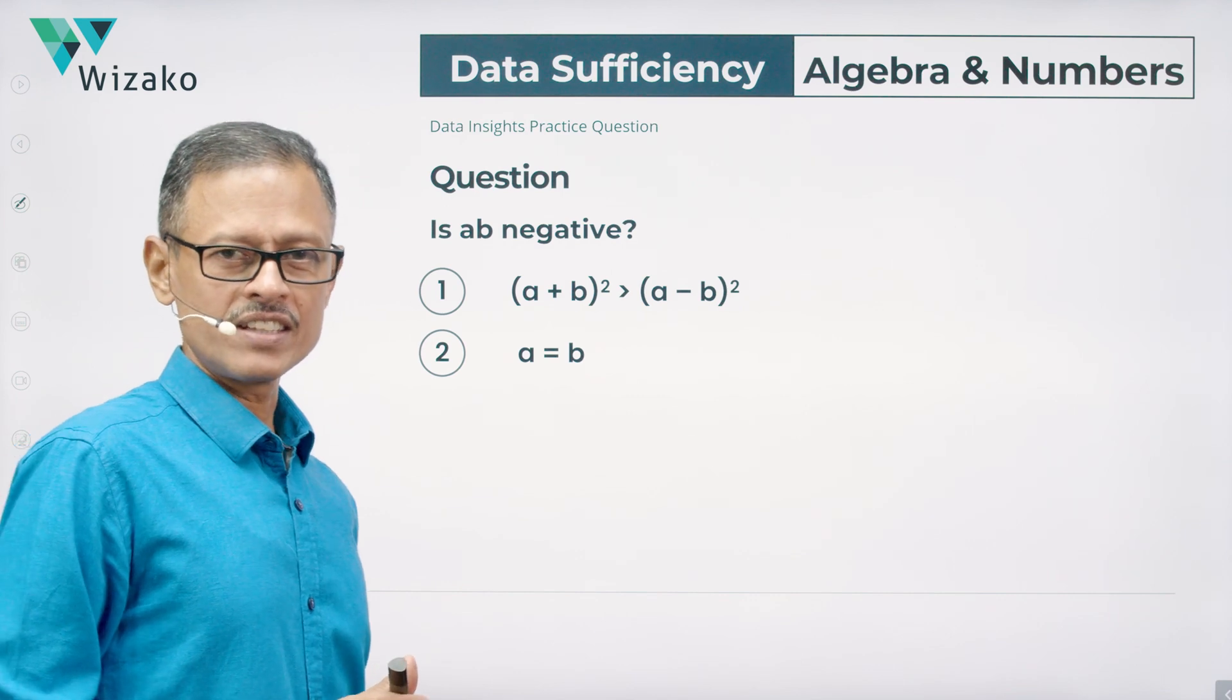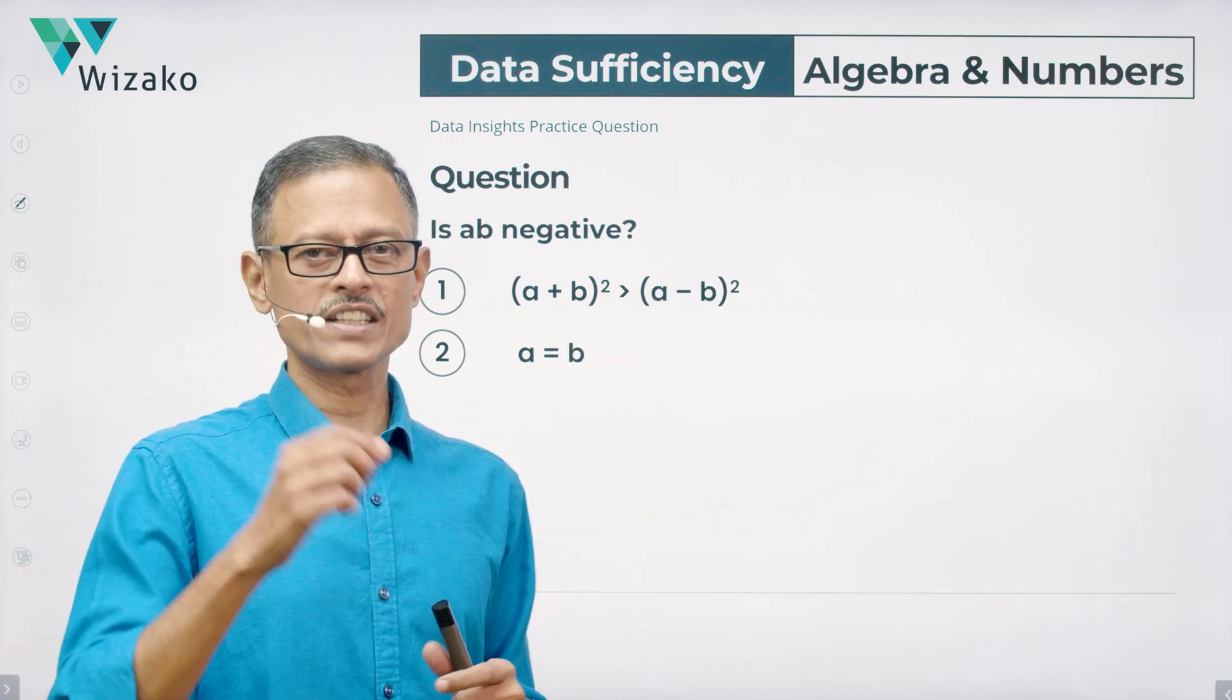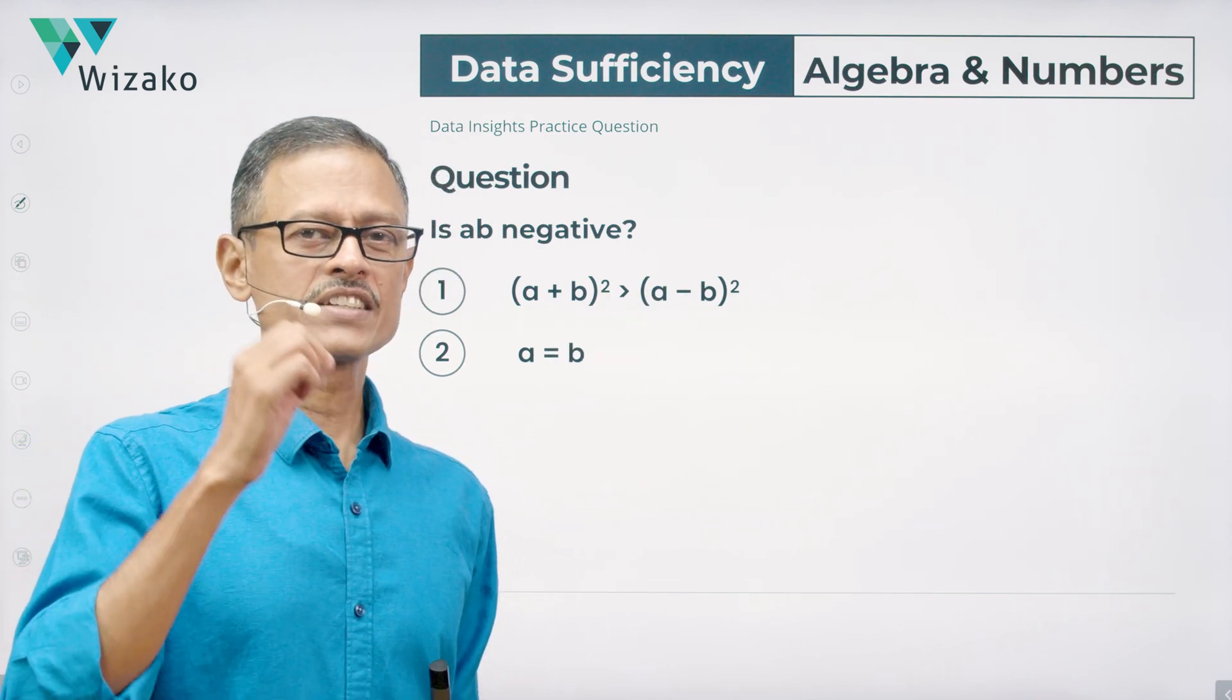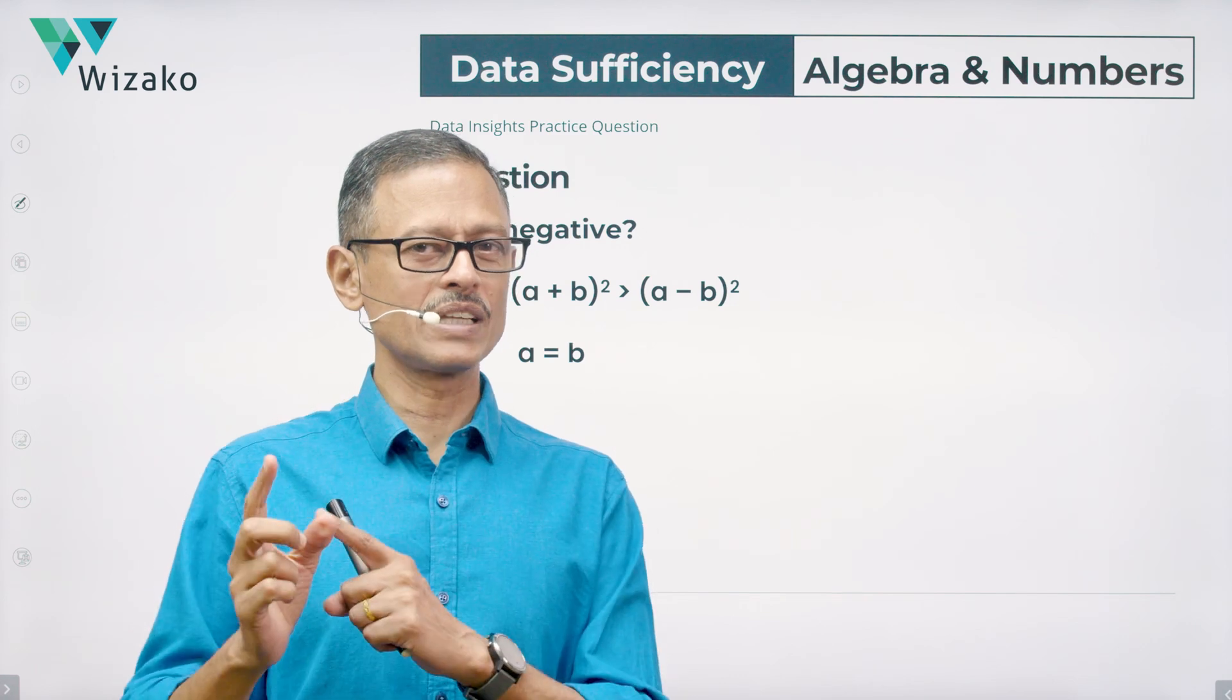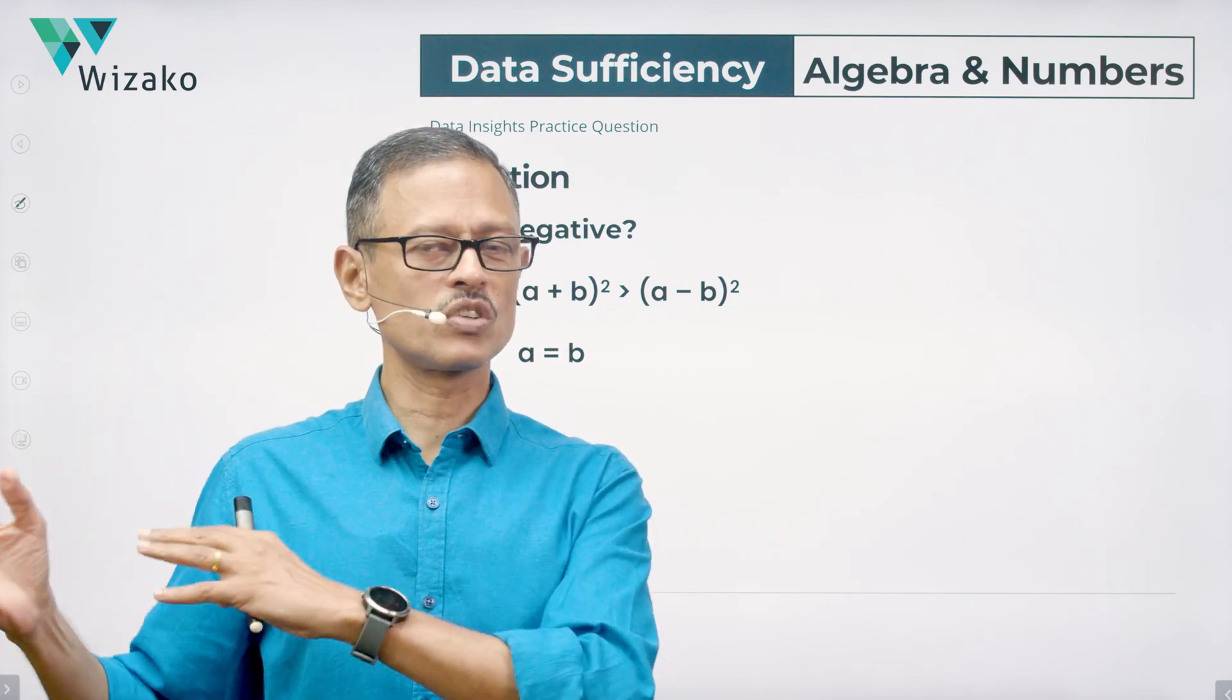Is AB negative the question? Two statements follow. We'll look at the statements in a while. Before that, let's take a look at the five answer options, quickly run through them, and then run through the process of solving a DS question.